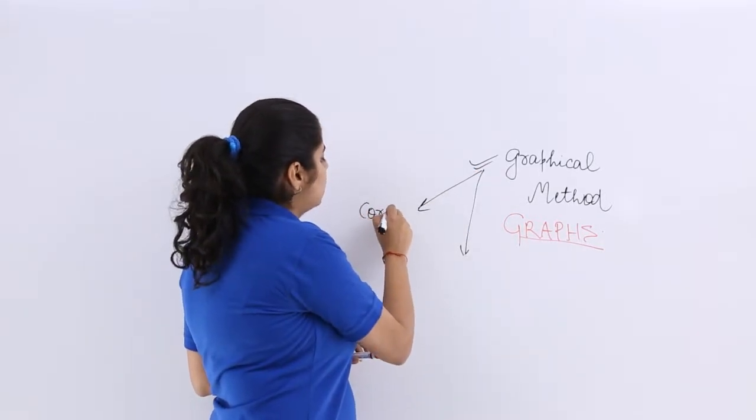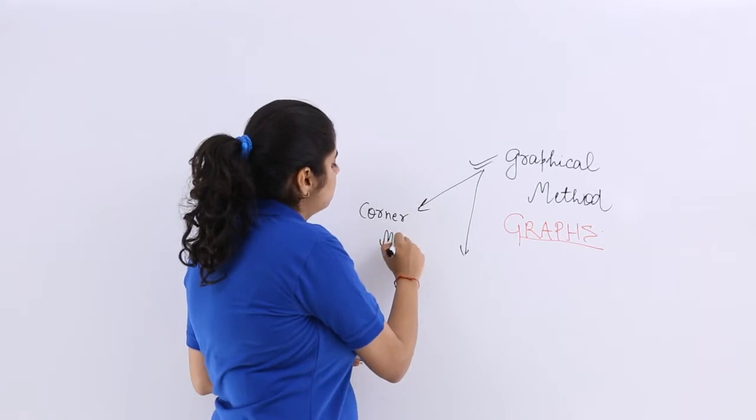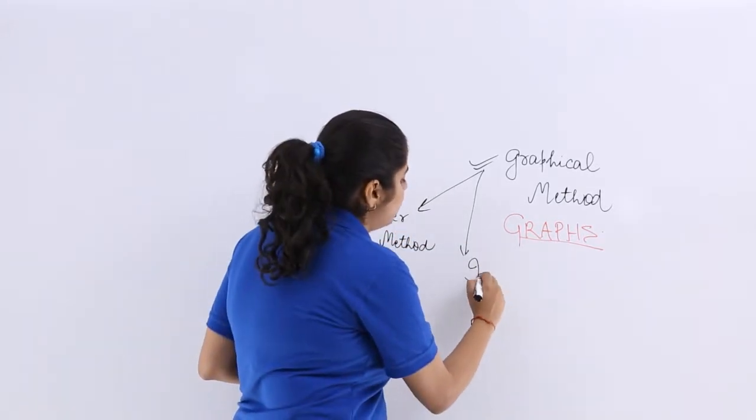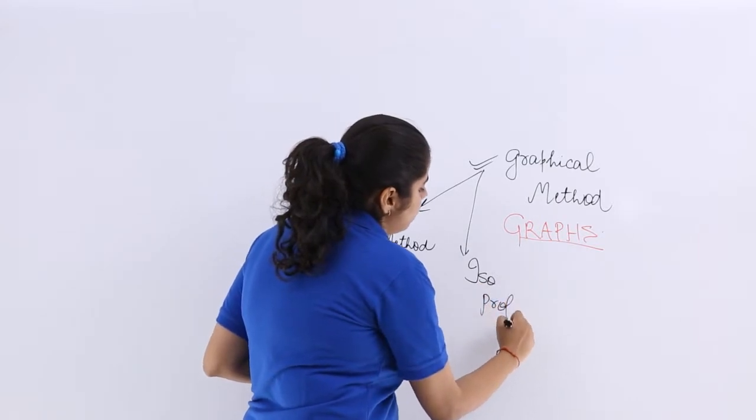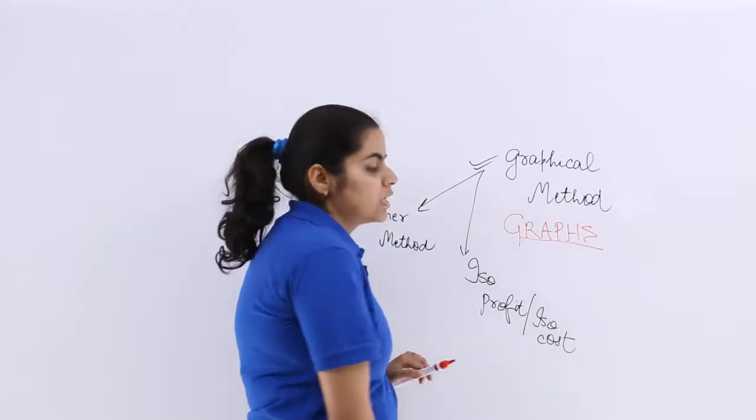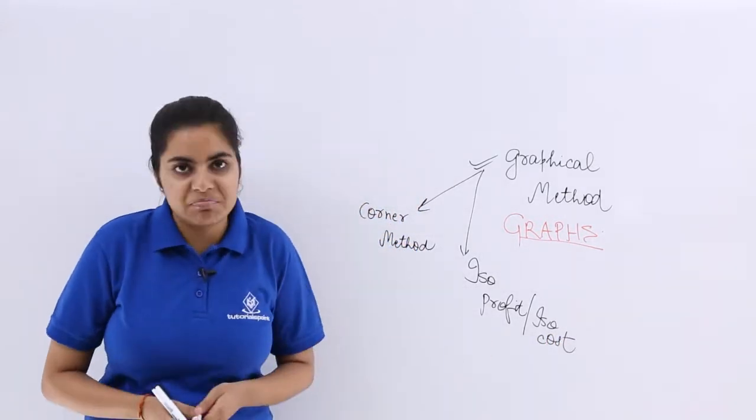One is your corner method and the other is iso profit or iso cost method. So iso profit or iso cost method.